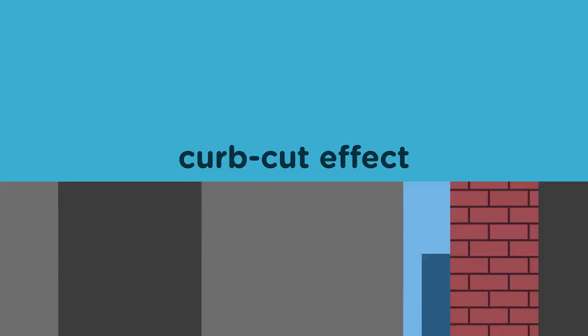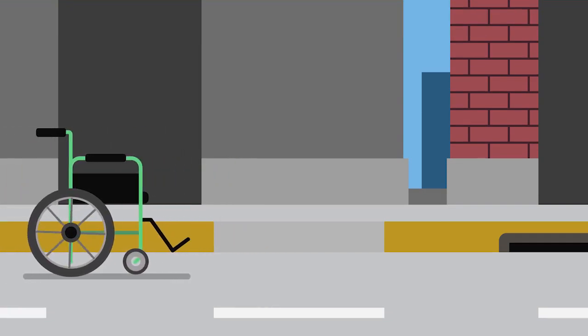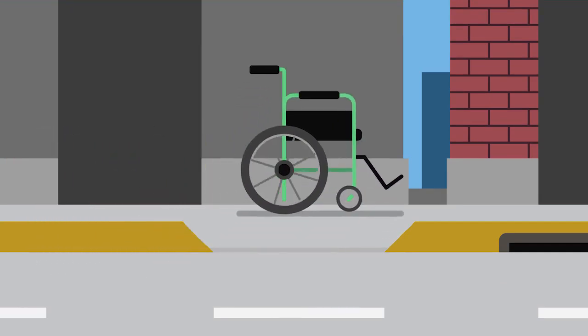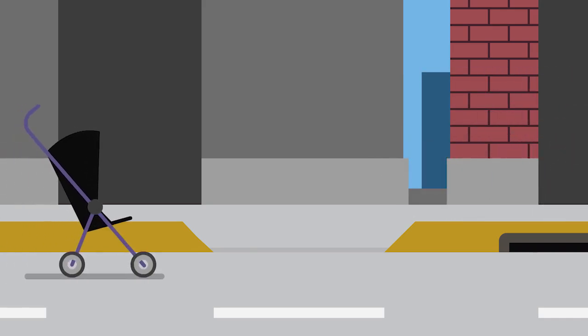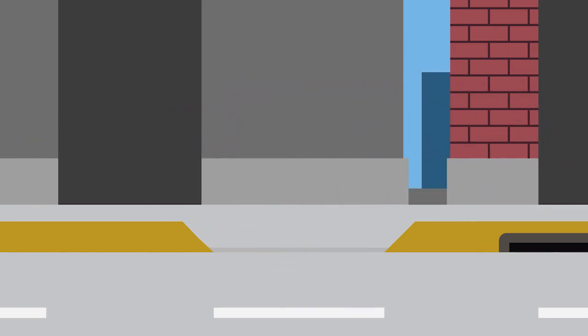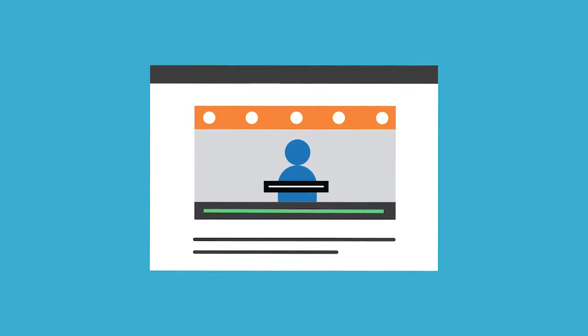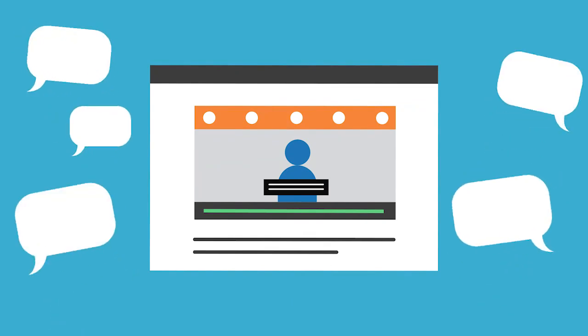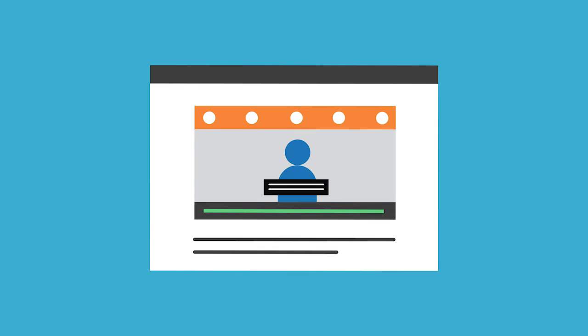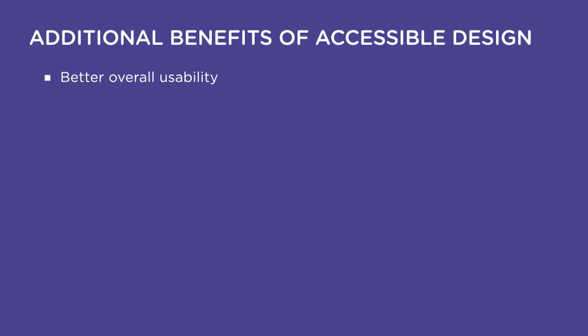The notion that accessibility has benefits beyond allowing people with disabilities to use your product is termed the curb-cut effect. While cuts in elevated sidewalks were originally developed to benefit wheelchair users, they also make life easier for pedestrians pushing strollers or bicycles, wheeling luggage, using crutches, or distracted by a mobile device. Similarly, while video captions are critical for deaf users, other viewers might use them in a noisy room, to understand difficult vocabulary, or to help them focus and retain information. If your product isn't really usable until everyone can use it, you'll never omit accessibility concerns from the design process.